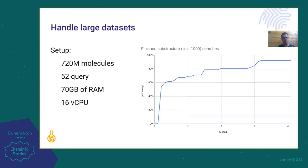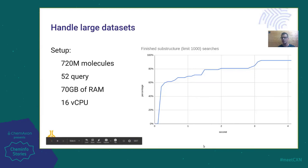Let's go to the next topic for this microservice, which comes from the fact that the new engine is used in this microservice architecture. Here I will focus on the DB search. Last year, we made an experiment and we used the NMI dataset, which contains 720 million structures, and we put 52 different queries to do substructure searches on this huge amount of data. These 52 queries were different scaffolds, from a generic one like a benzene ring to a really specific one — some of them even contained query bonds. For the setup, we were using an AWS instance with 70 gigabytes of RAM and 16 virtual CPUs. On this graph, I will try to summarize the results.